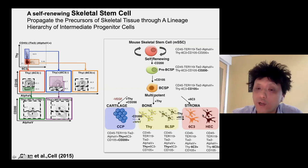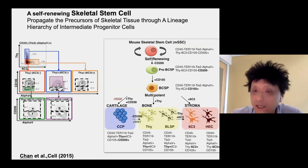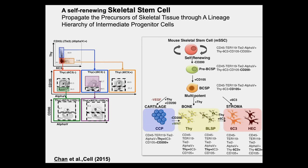However, we were not able to see that the skeletal stem cell can give rise to other bone cell types such as blood vessels or fat. It is lineage-restricted to just bone, cartilage, and stromal cells.